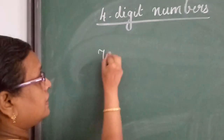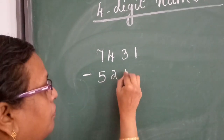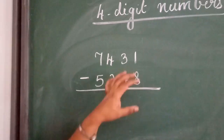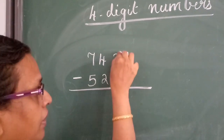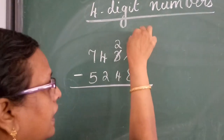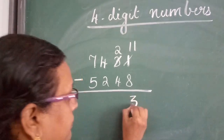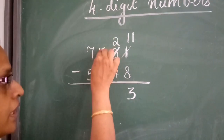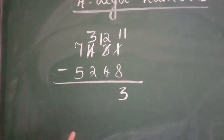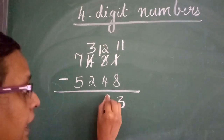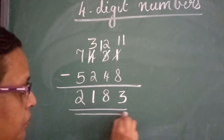For example: 7,431 minus 5,248. Write it according to the place value. 1 minus 8 is not possible. So, you take 1 from the tens place — this becomes 2 and this becomes 11. 11 minus 8 equals 3. Now, 2 minus 4 is not possible. So, you take 1 from the hundreds place — this becomes 3 and this becomes 12. 12 minus 4 equals 8. Then, 3 minus 2 equals 1. And 7 minus 5 equals 2. So, the answer is 2,183.